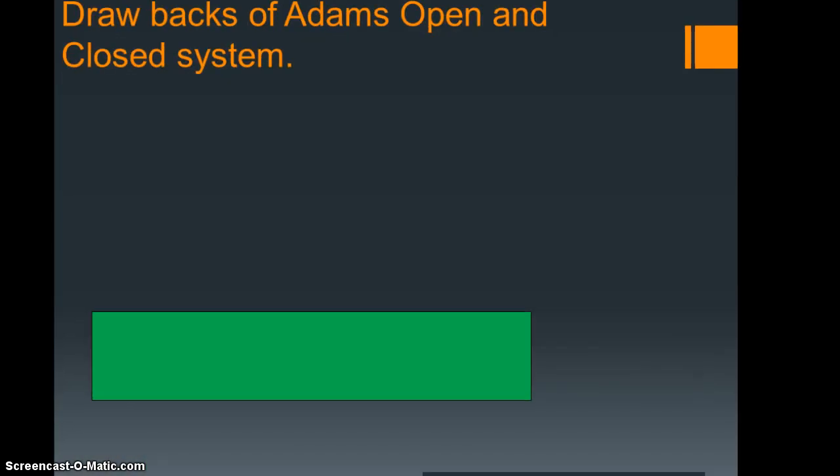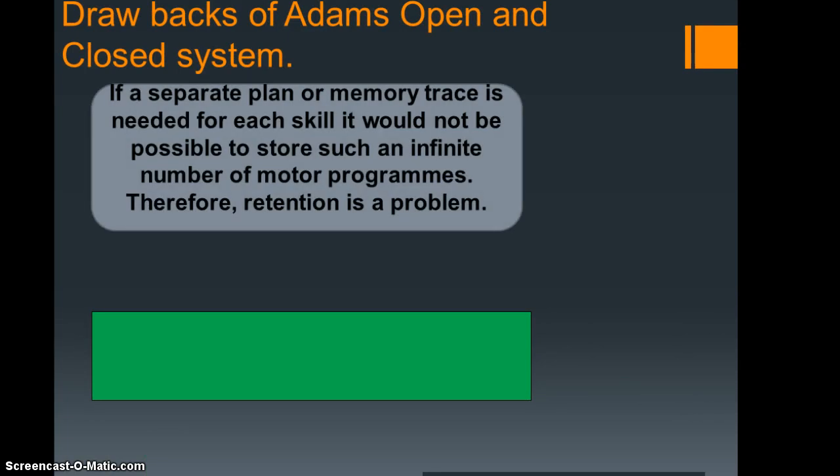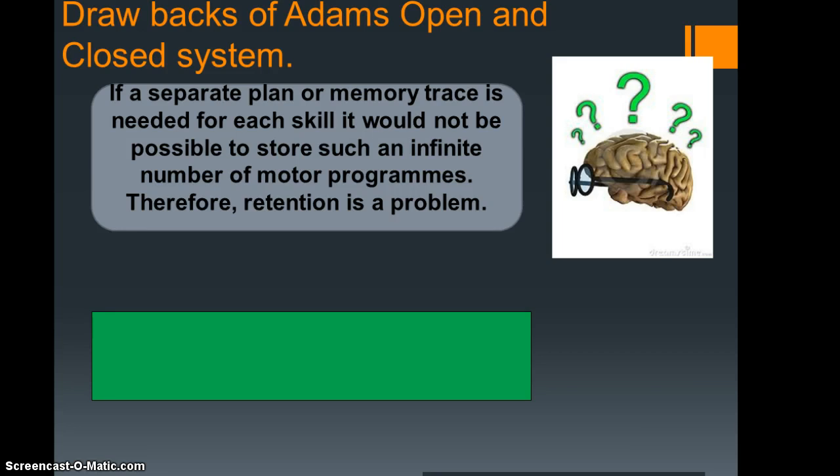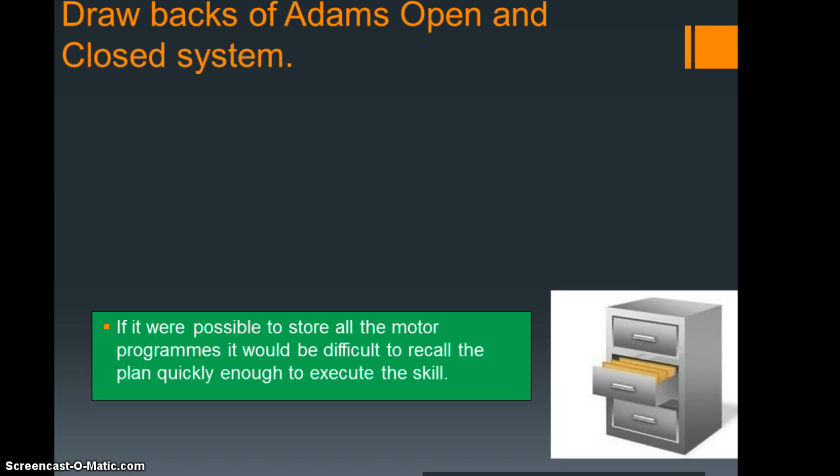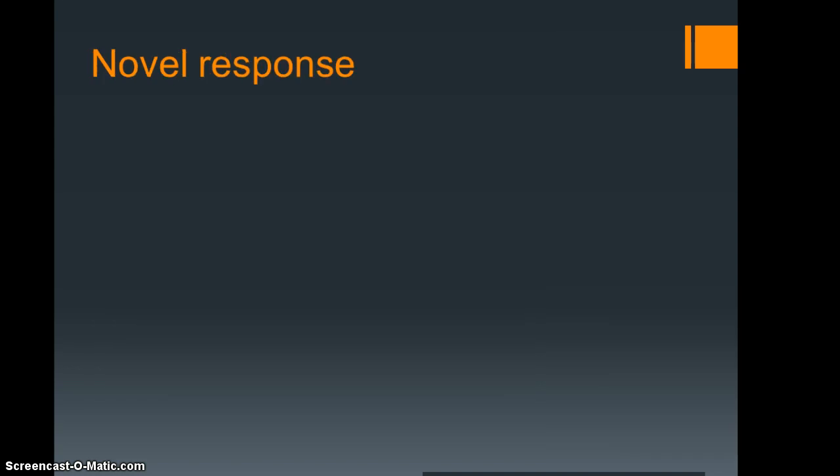Now there are some drawbacks to these open and closed systems that Adams has come up with. It's very simple but important to remember. If you had a separate plan or memory trace needed for every single skill, then you could have an infinite number of motor programs and therefore retention would be a problem. And if it were possible to store all these motor programs, it would be difficult to record them. Imagine trying to file through all of those motor programs and then draw the right one out, because most sports activities are done quite quickly. You'd have to have a really strong memory trace for every single skill to be able to perform them well.